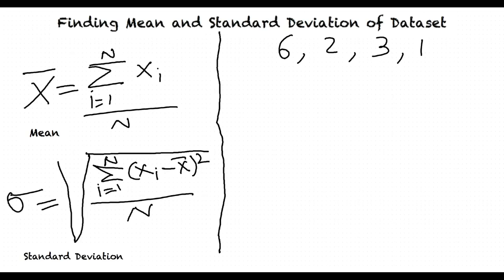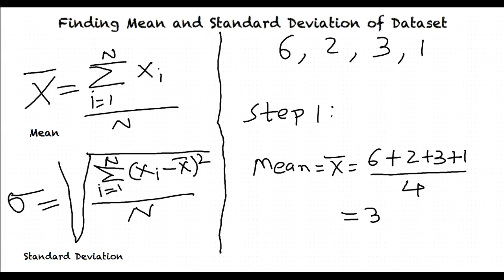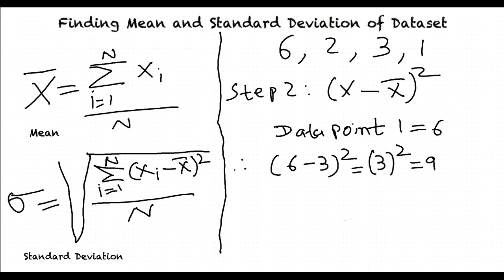Now I will show an example to explain the steps. Find out the mean and standard deviation of the data 6, 2, 3, 1. Step 1: Find out the mean of the data. Mean equals 6 plus 2 plus 3 plus 1 divided by 4, which equals 3.